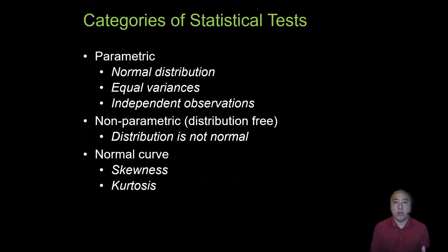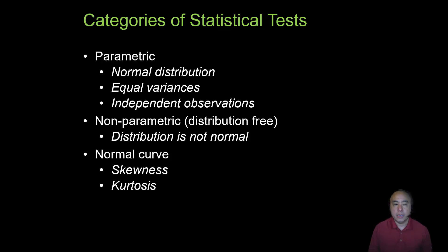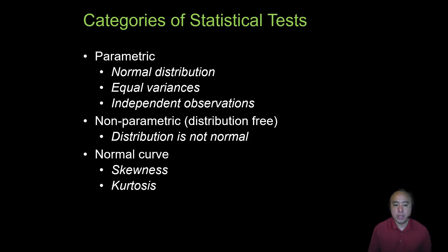The category or paradigm under which these statistical tests are performed is called parametric statistics, and it's based on the assumptions that the distribution is normal, that the variances in the data are equal, and that the observations are independent. There are also techniques that do not depend on the assumption of normal distribution — we call these non-parametric techniques, which I cover in a separate video.